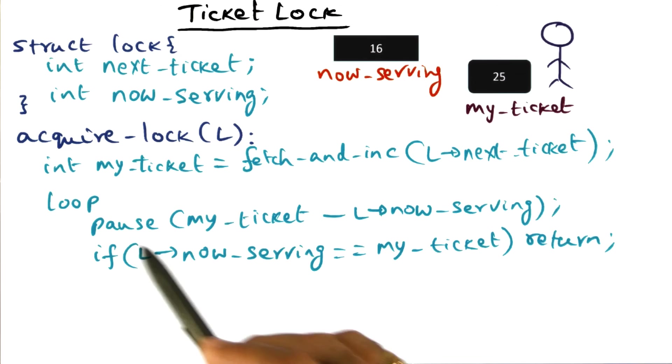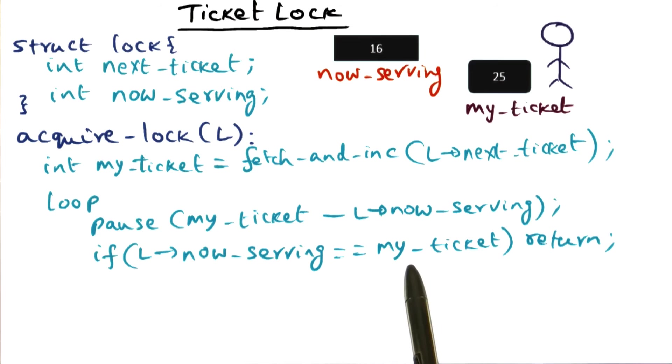So basically, I'm looping, waiting for my number to be up so that I can assume that I've got the lock. And how am I going to get this information that my ticket is up for serving?